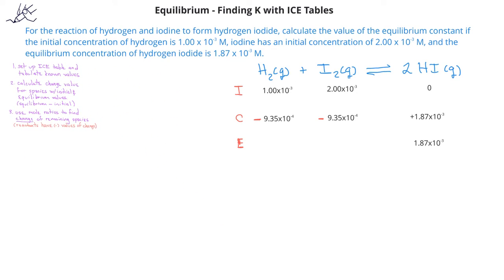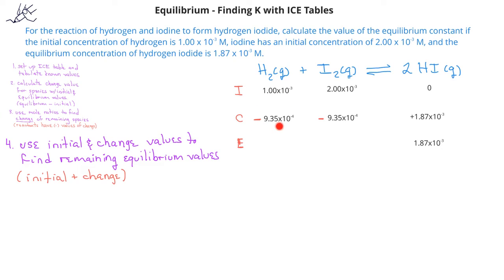Now that we know the initial and change values for iodine and hydrogen, we can add the initial and change values to obtain the equilibrium concentrations for each species. The equilibrium value for hydrogen is 0.065 × 10⁻³ M. When we add the initial and change values for iodine, we get a value of 1.065 × 10⁻³ M.